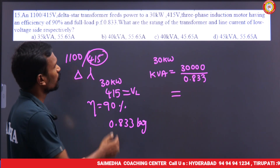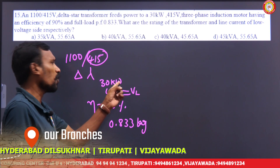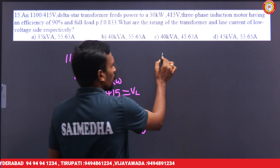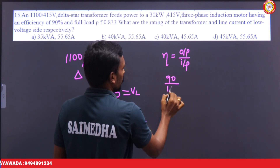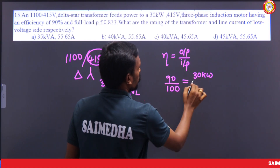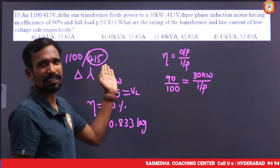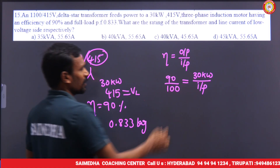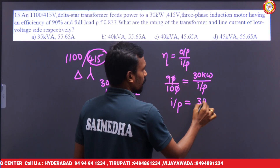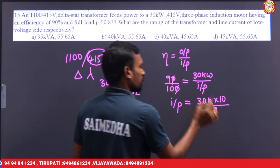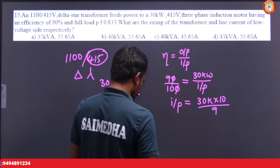Efficiency is also given — we need to calculate the input power. Efficiency equals output divided by input. Efficiency is 90%, output is 30 kilowatts. The input of the induction motor is the output of the transformer. So input equals 30 kilo into 10 by 9. This is the input power in kilowatts.